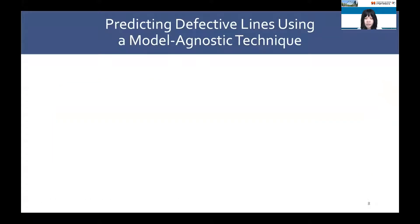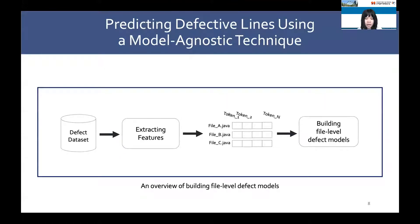Our framework consists of two main parts: file-level defect models and a model-agnostic technique. I will start with how we build file-level defect models. Given a file-level defect dataset — a set of source code files labeled as defective or clean — we first extract bag-of-tokens features for each file, then we train a traditional machine learning technique using the extracted features to build a file-level defect model.